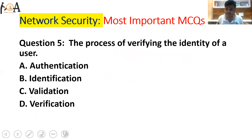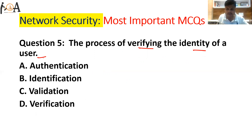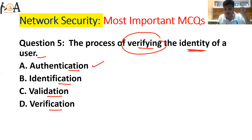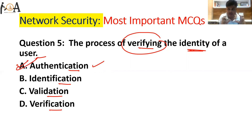Question number five: the process of verifying the identity of a user is called what? There are four important terminologies: authentication, identification, validation, and verification. Authentication is the process of verifying the identity of a user — whether the person accessing our file is an authenticated one or not. The process of verifying identity is called authentication.